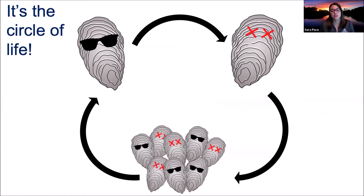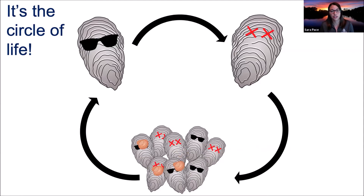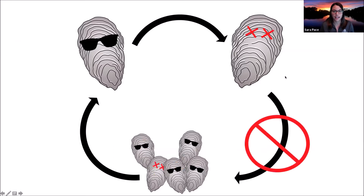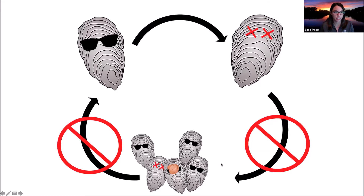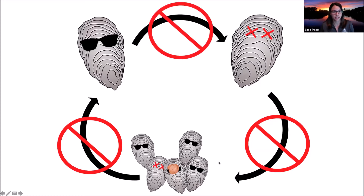Oysters need not only to reproduce but also to continually contribute to reef structure. The death of oysters creates a positive feedback loop because it increases the amount of shell available on the reef — dead oysters contribute to the reef framework, providing substrate on which larvae can settle, increasing the likelihood that larvae grow to adulthood and in turn contribute to the reef. However, when more shell is lost than added, a negative feedback loop is created as recruitment is reduced. Less surface area means fewer larvae settle, fewer grow to adulthood, and fewer adults die to replenish the reef framework.